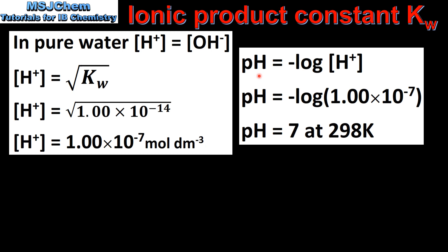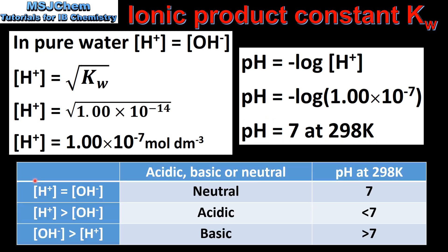From the previous video, we know that the pH is equal to the negative log of the hydrogen ion concentration. So the pH equals the negative log of 1.00 times 10 to the negative 7, which gives us a pH for pure water of 7 at 298 K. As shown in a previous table, when the concentration of hydrogen ions equals the concentration of hydroxide ions — which is the case in pure water — it's neutral, and the pH at 298 K is equal to 7.